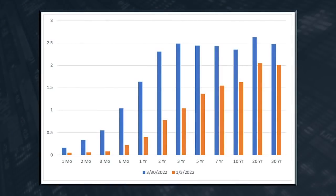Let's start with the yield curve. What's a yield curve? A yield curve is essentially this. Here is a chart that shows yield curves — basically two of them. One is from the first trading day of this year, the third of January, and the second one is from the 30th of March, the day that I recorded this video.